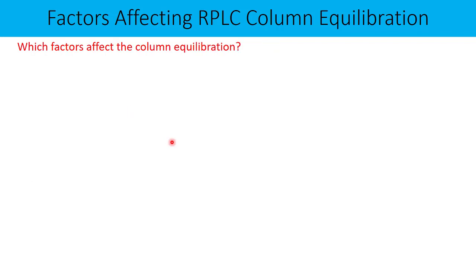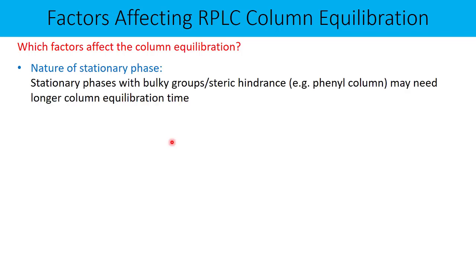Let us now understand which factors really influence the column equilibration process. You must have heard that at least 10 to 20 column volumes are required for proper column equilibration. The first factor is the nature of the stationary phase. Stationary phases with bulky groups like phenyl may need longer column equilibration, because these bulky groups will resist the passage of your mobile phase throughout the stationary phase, resulting in a longer equilibration time.